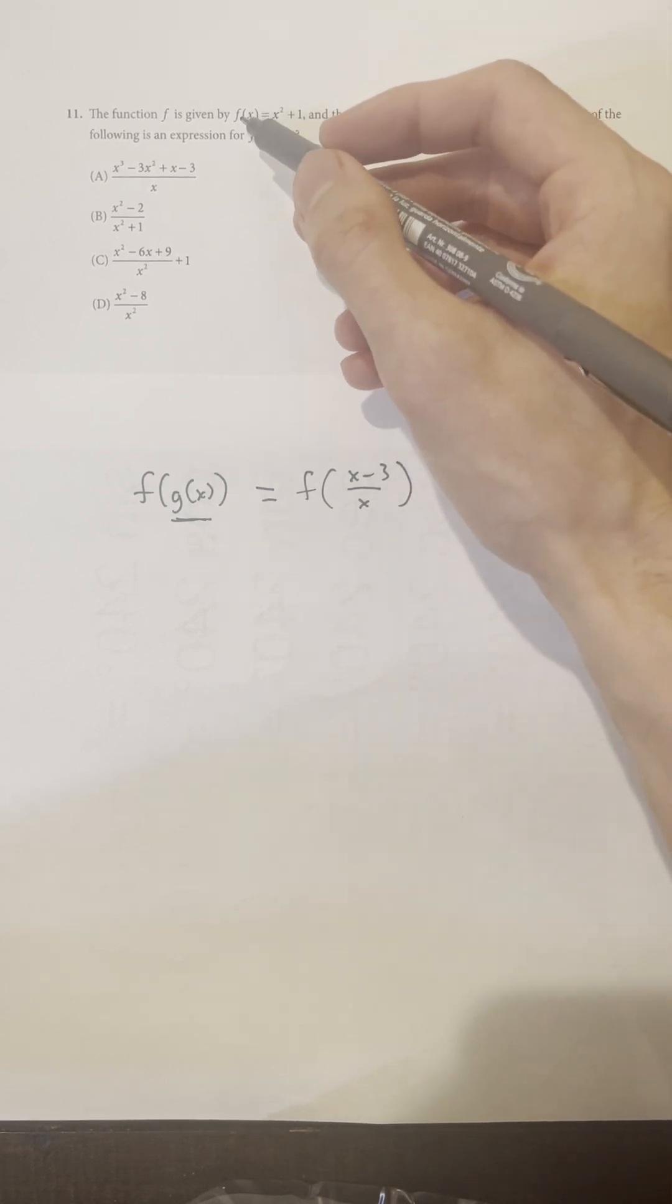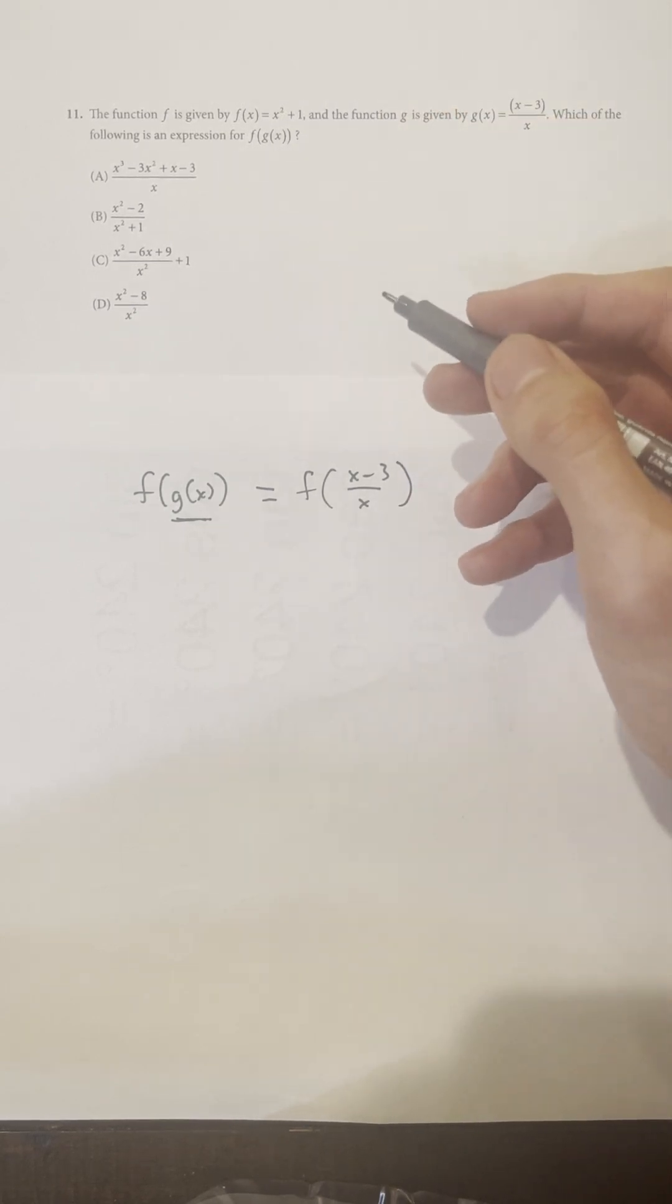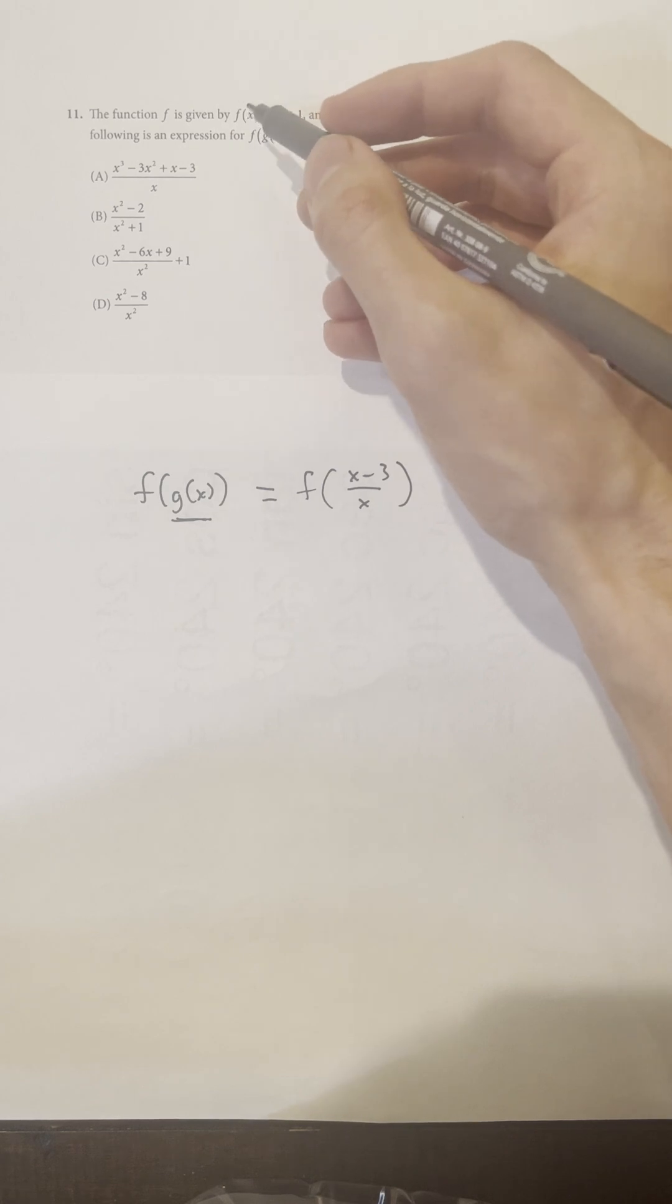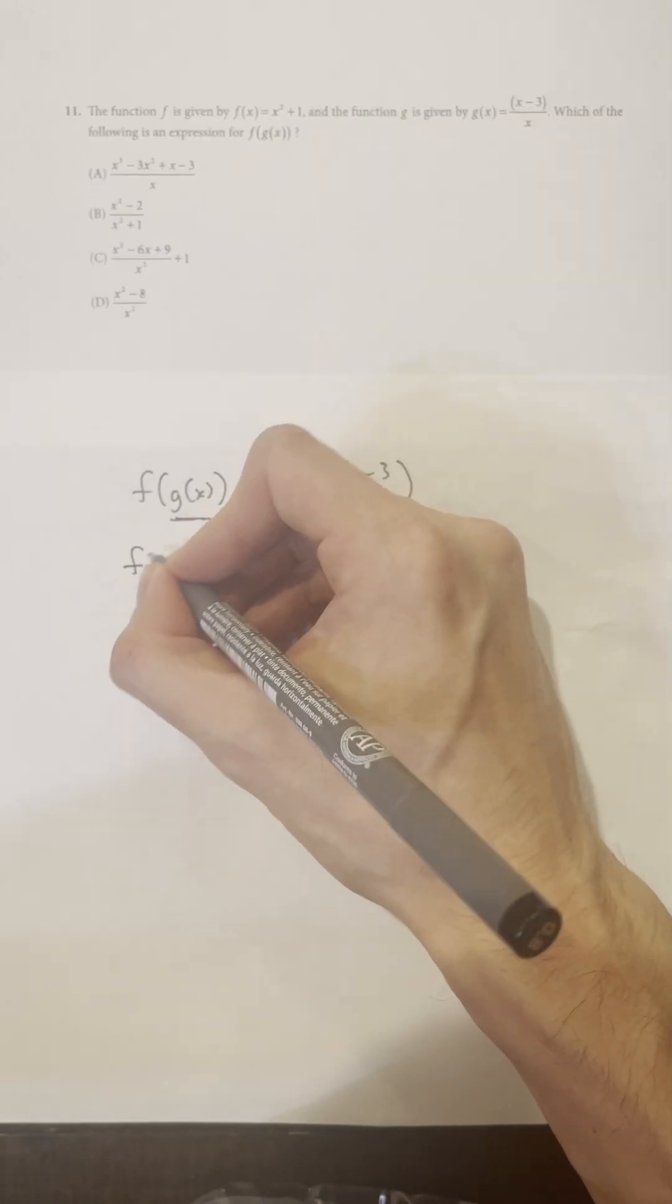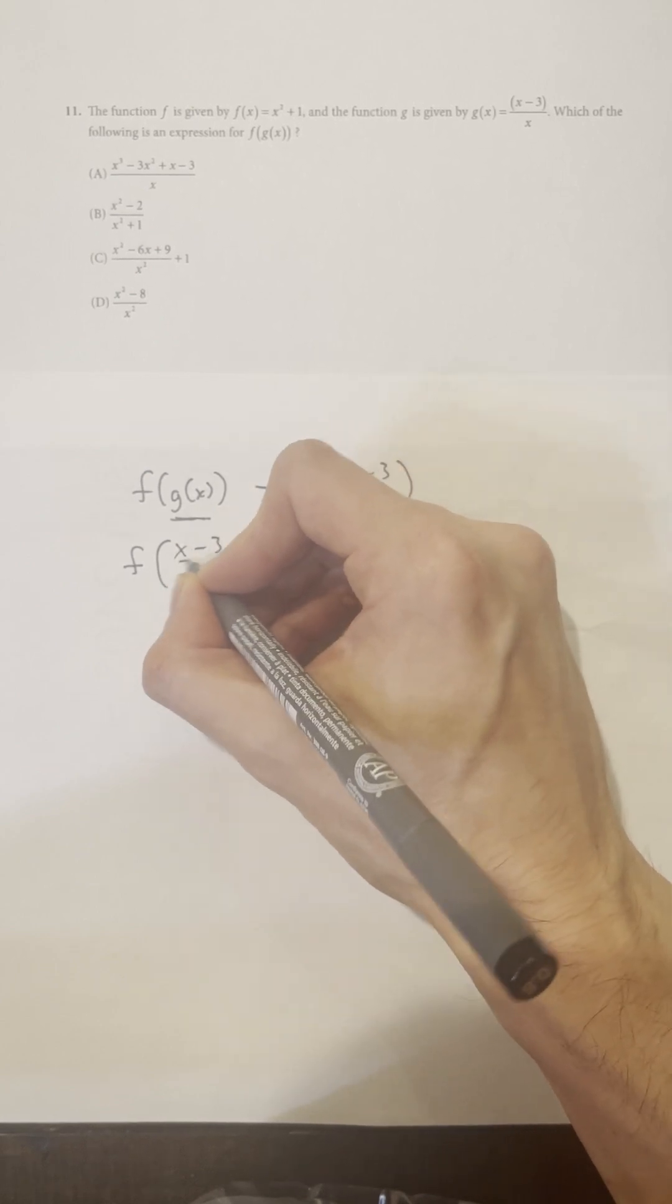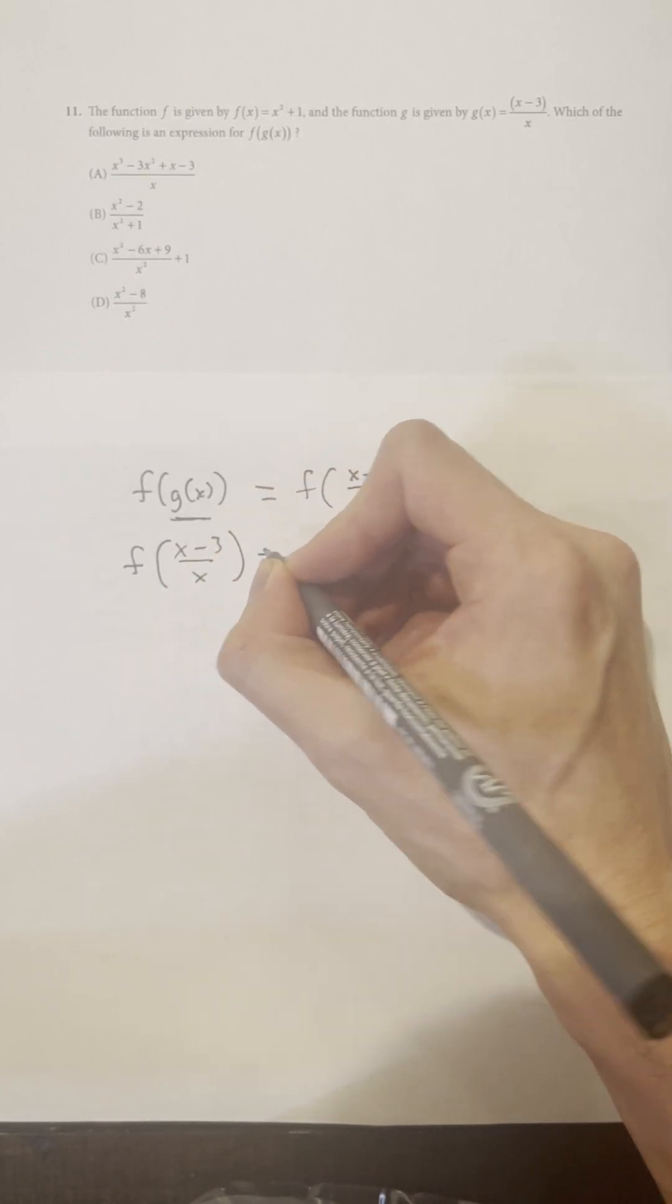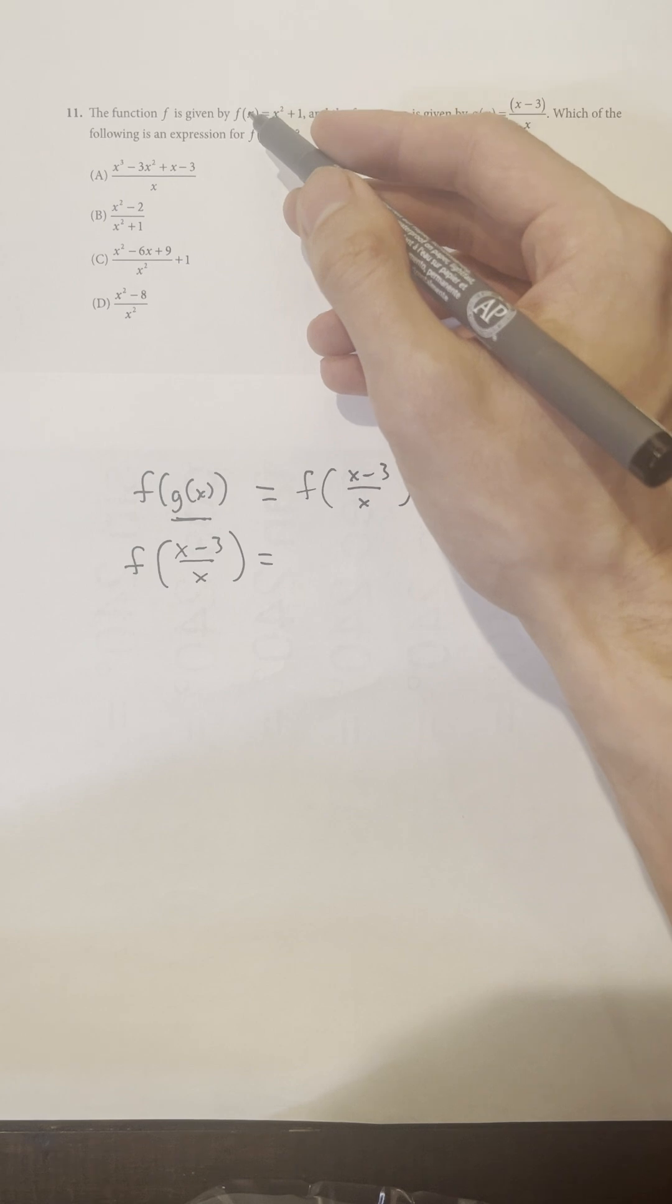Well, we need to use the equation with f, so I can go ahead and just change the x to (x-3)/x. So let's go ahead and do that. So f of (x-3)/x is equal to... well, I changed the x to (x-3)/x on the left-hand side of the equation.